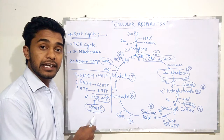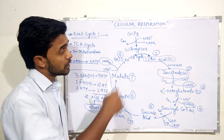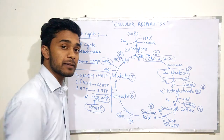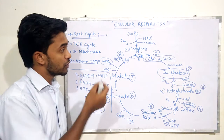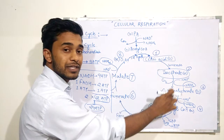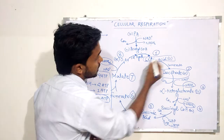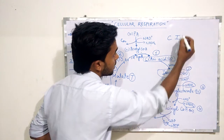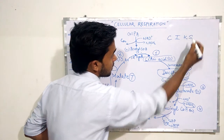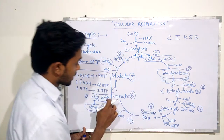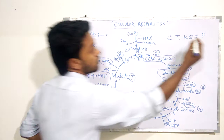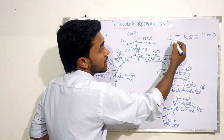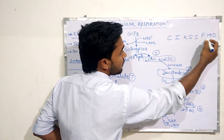The main question after understanding the total net gain of the Krebs cycle is how to remember the sequence of compounds. To help memorize the names, we take the first letters of the compounds: C, I, K, S, S, F, M, and O — standing for citric acid, isocitrate, alpha ketoglutarate, succinyl CoA, succinic acid, fumarate, malate, and oxaloacetic acid.